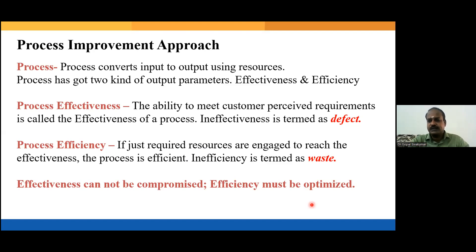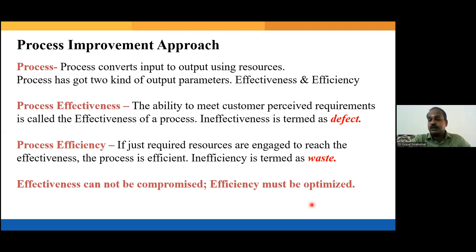Process effectiveness refers to the ineffectiveness of the process, which is termed as defects. Six Sigma is all about improving the process effectiveness — Six Sigma is all about defect reduction.